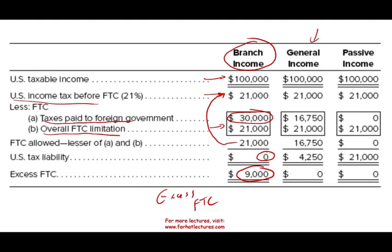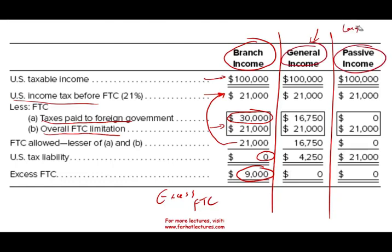Now let's look at the Uzbekistan operation, which falls in the general income basket. We have to break them down into baskets — the branch is different from the subsidiary, and within the subsidiary we have general income from Uzbekistan and passive income from the Cayman Islands. We take the $100,000. In the US they're supposed to pay 21%, which is $21,000. However, they only paid the foreign government $16,750. The overall foreign tax credit limit is $21,000, but they only paid $16,750, so we choose the lower amount. They're supposed to pay $21,000 but only paid $16,750, meaning they have to write a check to Uncle Sam for $4,250. They have no excess foreign tax credit. Also, the Costa Rican branch's excess credit cannot help them because they are in different baskets.